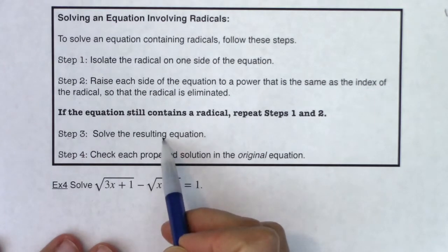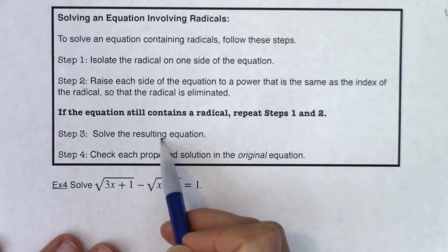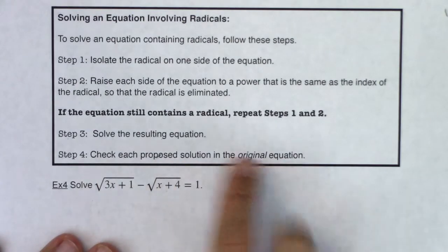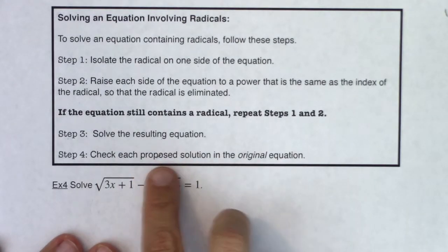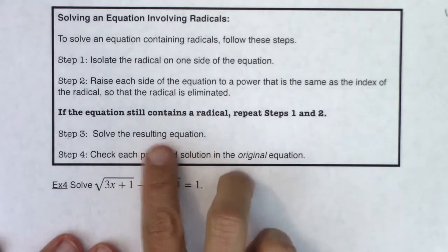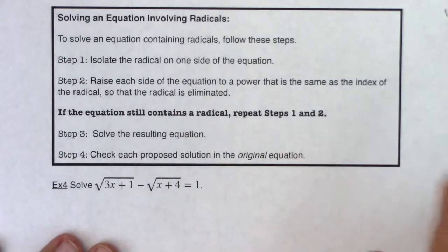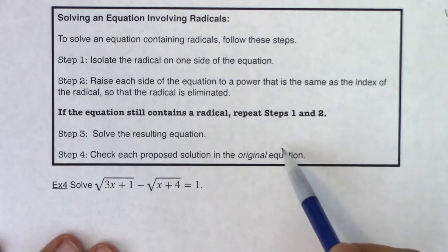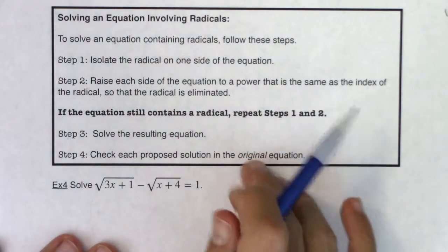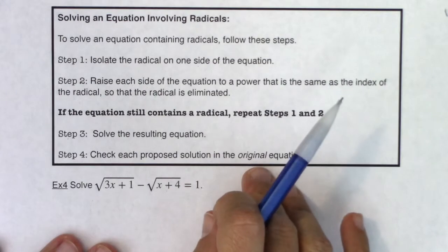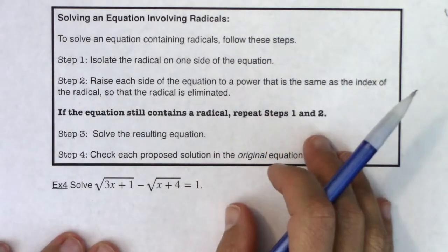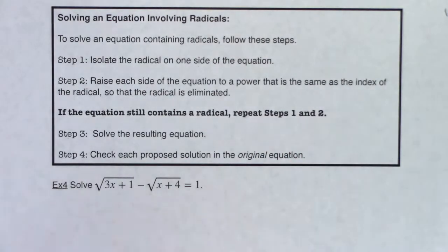We solved the resulting equation. It wound up being quadratic, so I happened to factor. And then we have to remember to check each proposed solution in the original equation, because as we saw in example 3, we got an extraneous solution. We got two answers by solving that quadratic equation, but only one of them worked in our original equation.